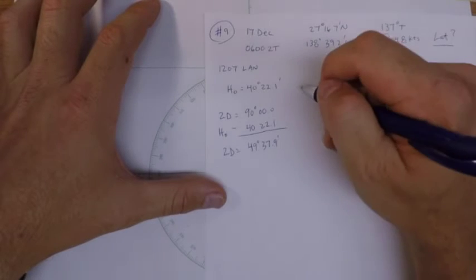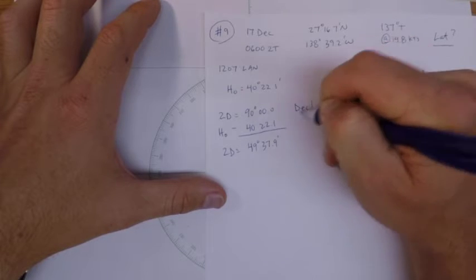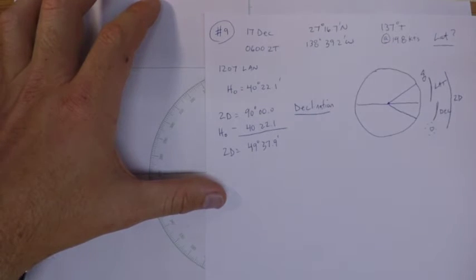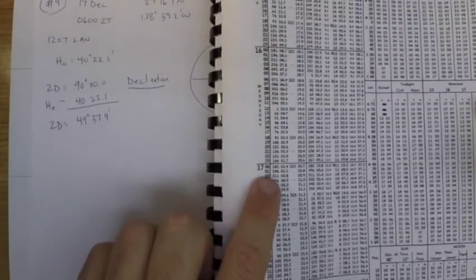And then the next thing to do is get our declination. We'll do that from the nautical almanac. So here on 17 December, we need to pull out a declination. And look, the declination is not changing that much. So that's fine.